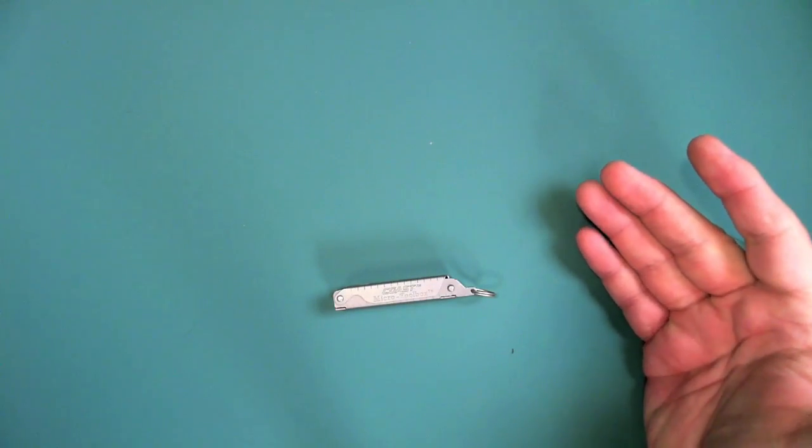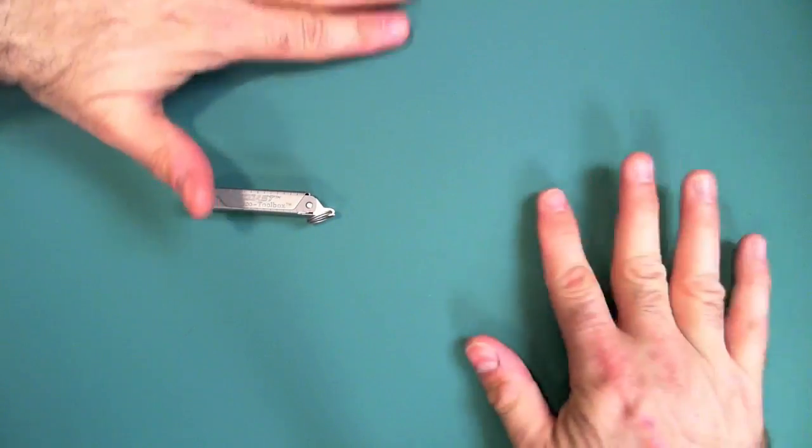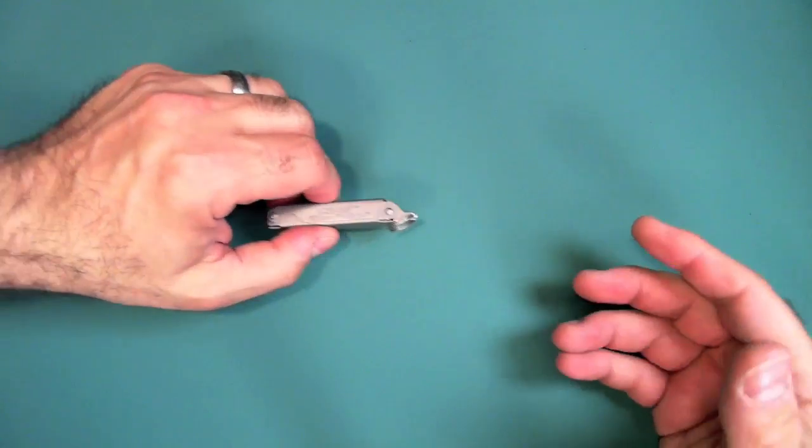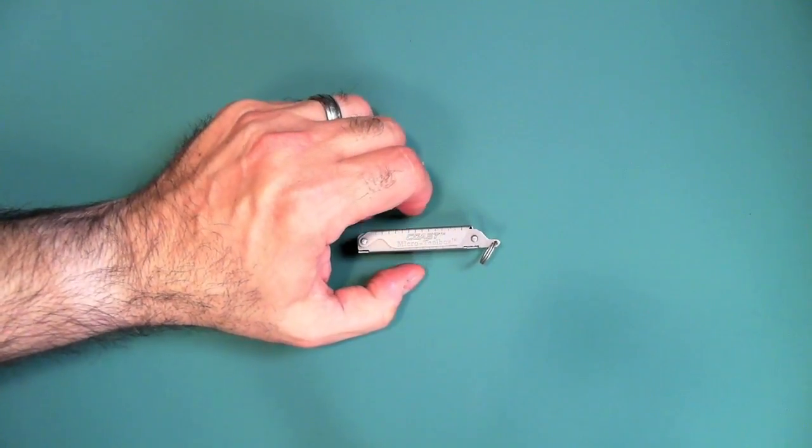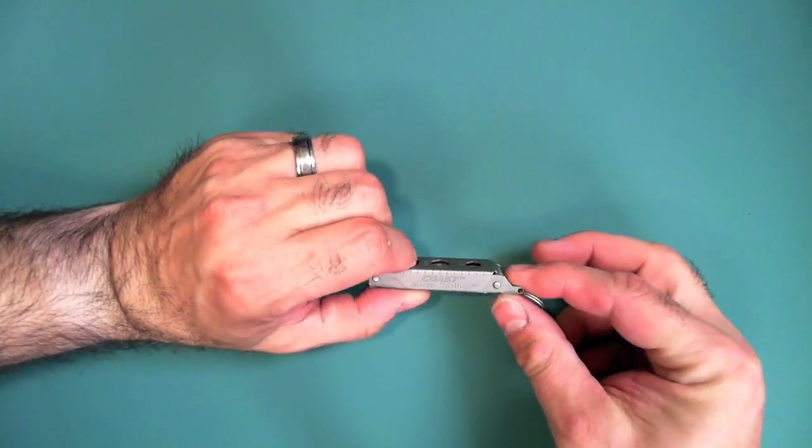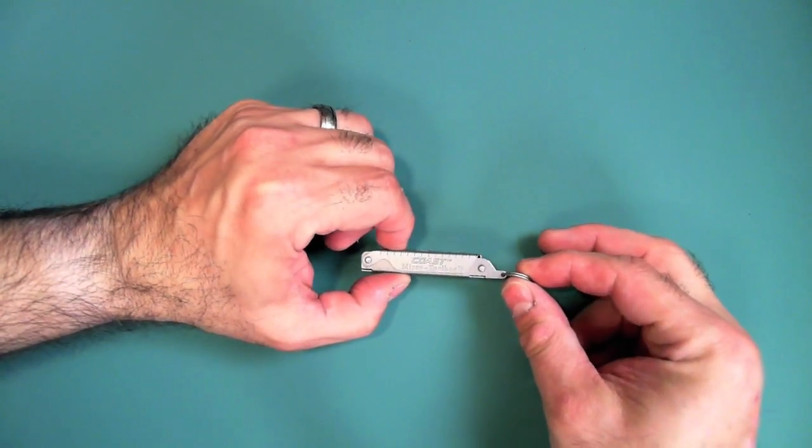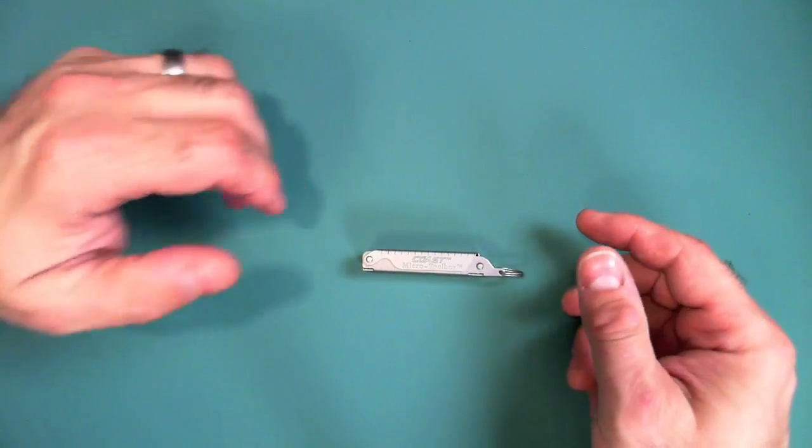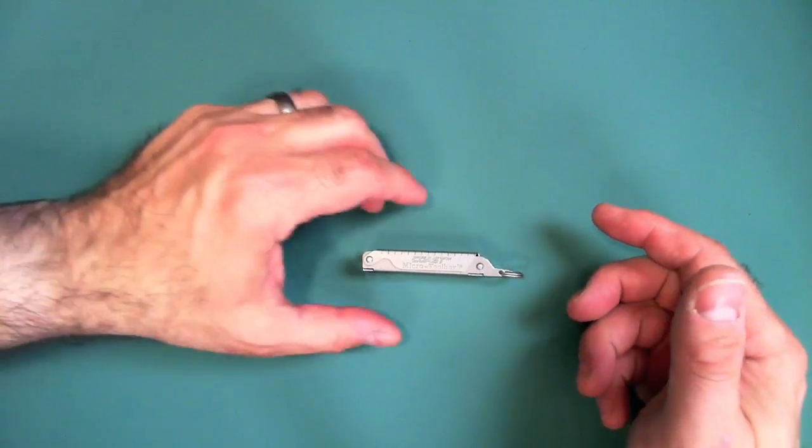Plus, you might also be going to a function where you want to look like you're not Batman with a utility belt with all kinds of stuff. So again, those are times where a nice mini tool like this would really come in handy. So let's take a look at what comes with this.